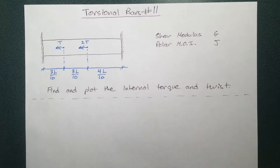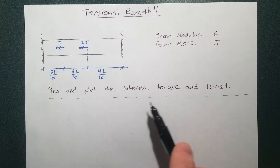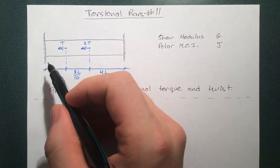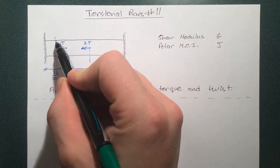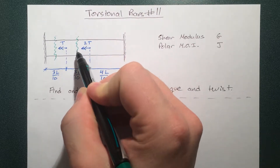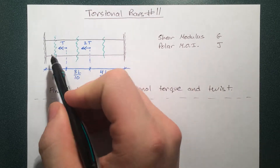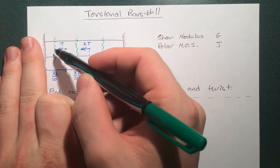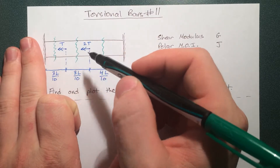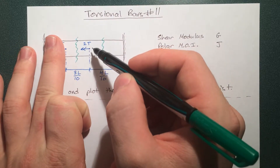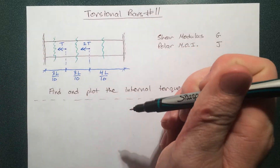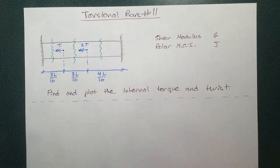Like always, if we need to plot internal things — in this case internal torque — we need to make cuts to expose those internal torques. We're going to make three cuts in this scenario: one there, one there, one there. Simply because between the support and the first applied force it can all be described by the same situation; between those two torques it's all the same; and between there and the end it's all going to be the same. There's nothing changing in those pieces.